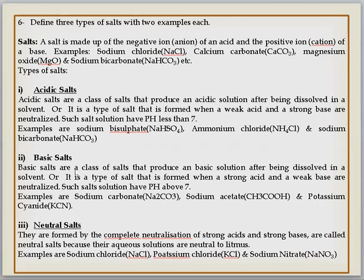Now let's talk about basic salt. What do we call basic salt? Basic salts are the class of salts that produce a basic solution after being dissolved in solvent. When we dissolve it in water, the solution will be basic. How do we know and why do we make it? It is a type of salt that is formed when a strong acid and a weak base are neutralized. When strong acid and weak base are neutralized, we get basic salt.